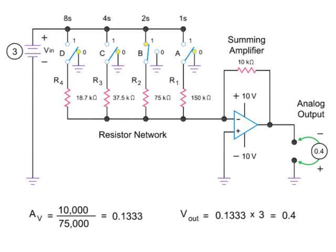Let's switch in another resistor value and look at what the voltage output would be. A binary input of 1.0.0.0 closes switch D, resulting in an input of 18.7 kilohms. The gain then would be 0.535, giving a final output of 1.6 volts.